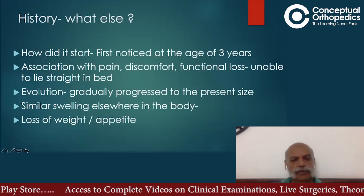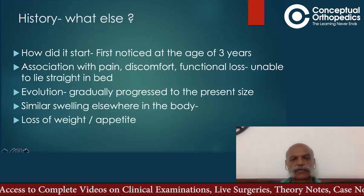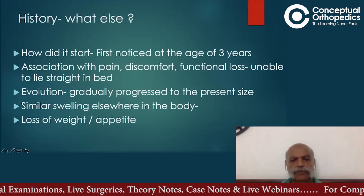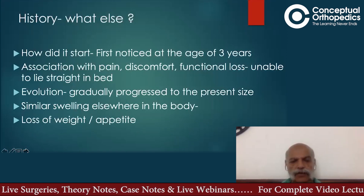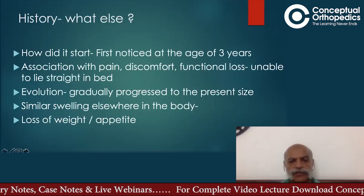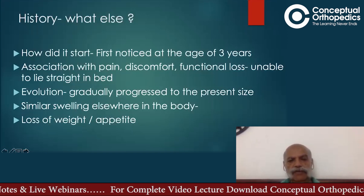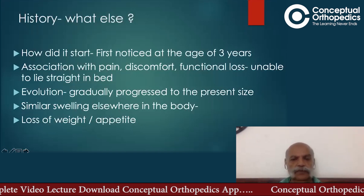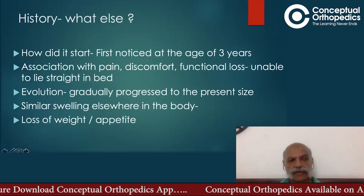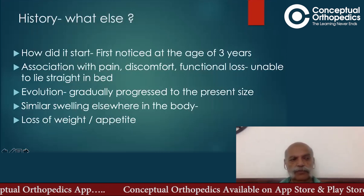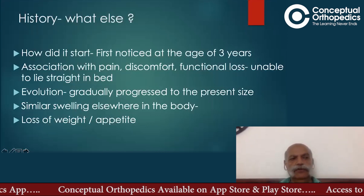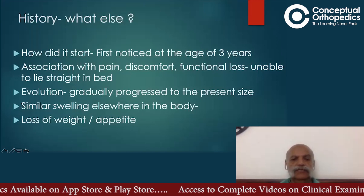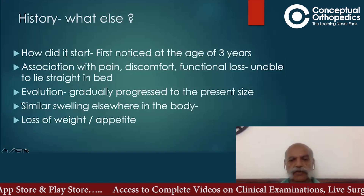This is important because we are still at the stage of history taking and have only had a glimpse of the swelling on inspection. It is important to elicit history of weight loss, loss of appetite, and fever because swellings in the paraspinal area — in the Indian subcontinent — can easily be arising from the spine. For instance, tuberculosis of the spine can give rise to a paraspinal abscess. At this stage we do not yet know the consistency of the swelling, so constitutional symptoms are highly relevant. In this case, there were none.